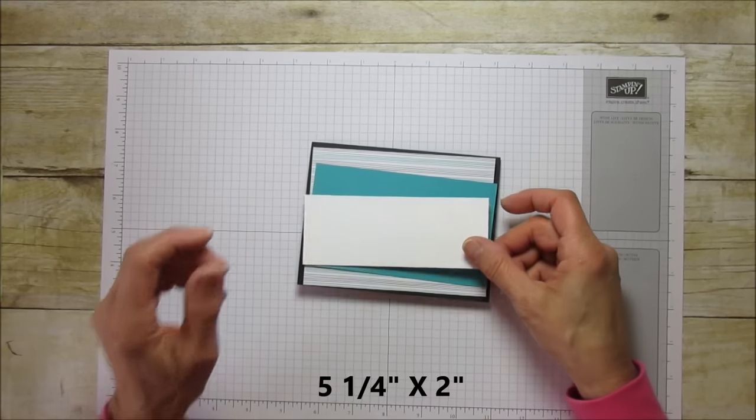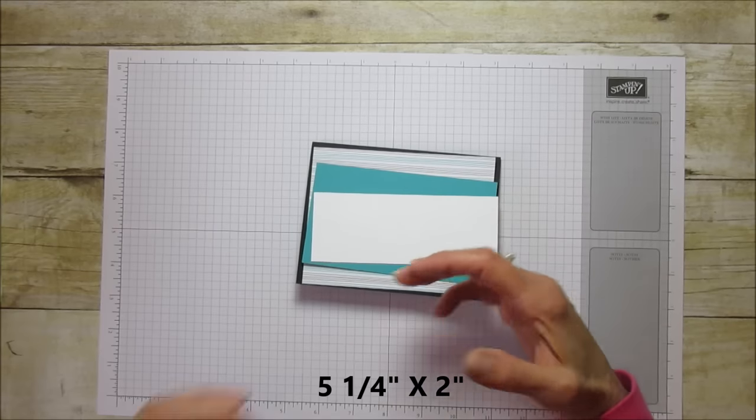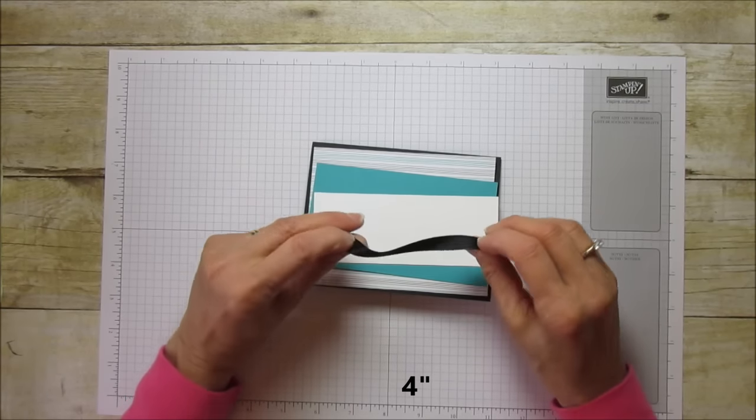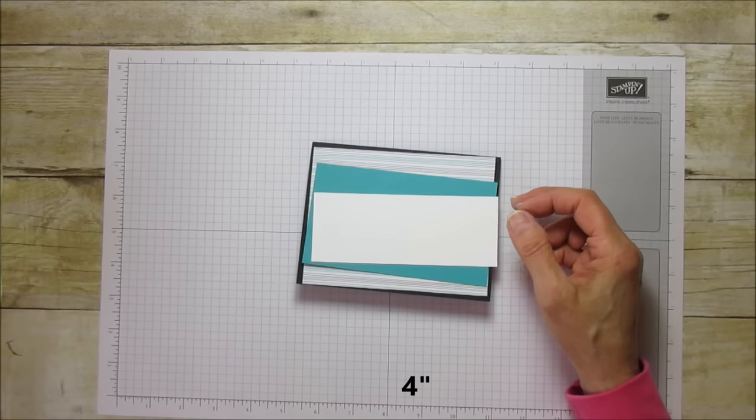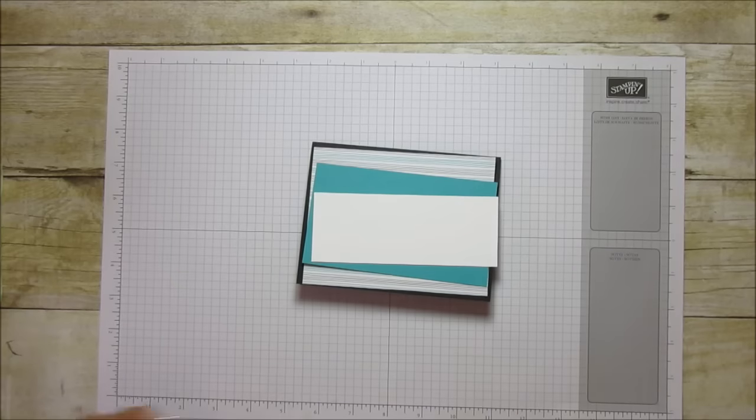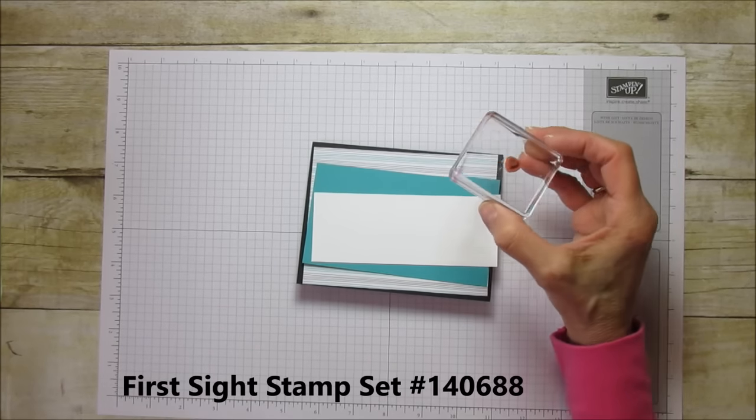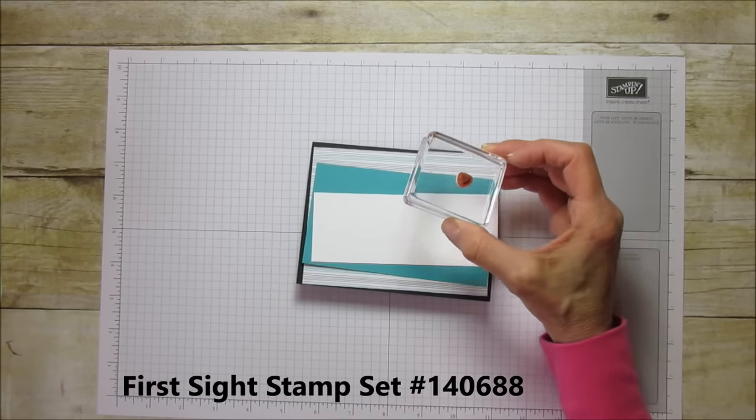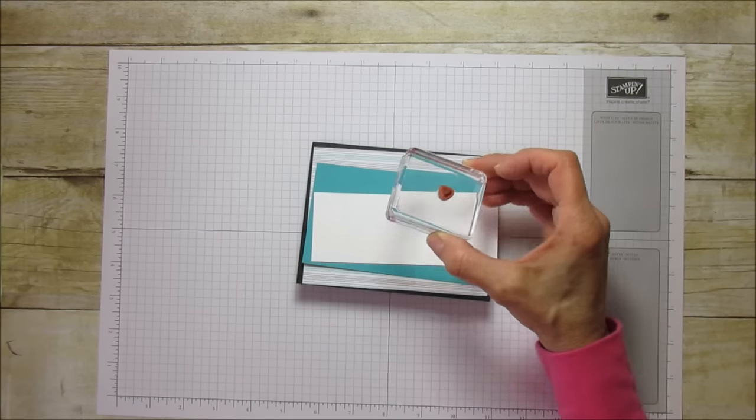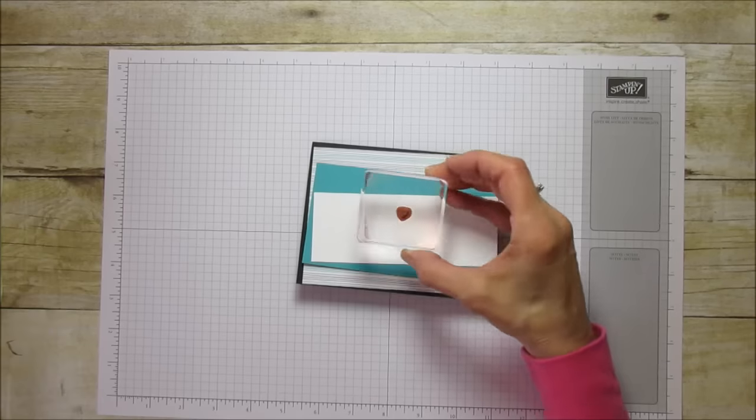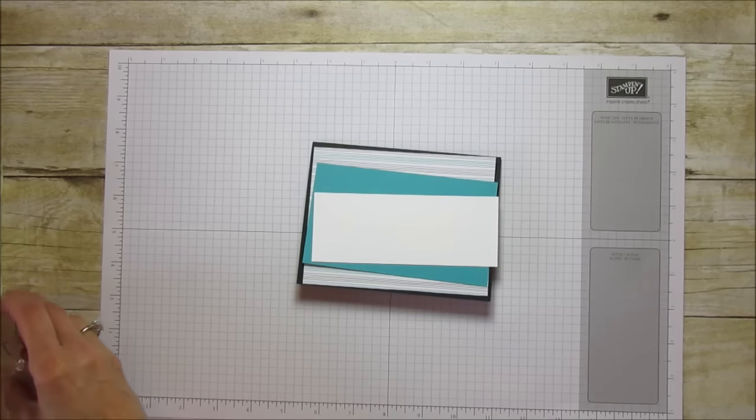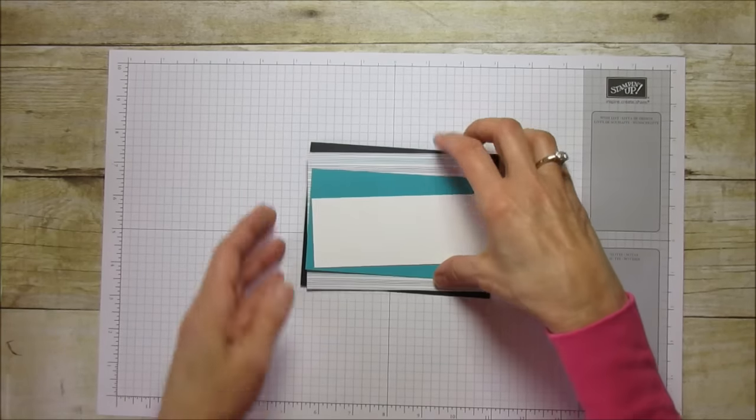You'll also need basic black stitched ribbon. I also used this little heart - I can't even remember which stamp set I grabbed this from, but I'll post it on my blog. I just wanted to add a little something extra to it.